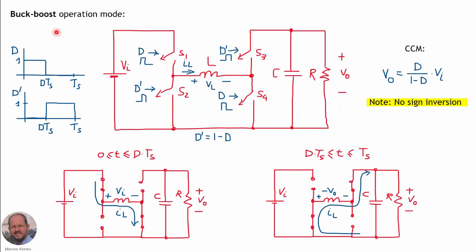Let's see the different converters we can implement with this topology. The first is the buck-boost operation mode. To better understand the control of the converter, we show here the signal corresponding to the duty cycle D, meaning the switch is on during the interval from 0 to D·Ts, and D' is the inverse signal, activated during the interval D·Ts up to Ts.